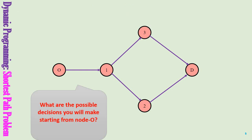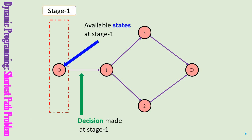What are the possible decisions you will make starting from node O in order to reach node D? The only decision you can make now is to go from O to 1. So node O could be a state of the dynamic programming problem and node 1 could be a state as well. In dynamic programming, a decision will take you from a state in a stage to a state in the immediate next stage. Therefore, node O could represent a state in stage 1, because in forward recursion we label the first stage on the left-hand side as stage 1.